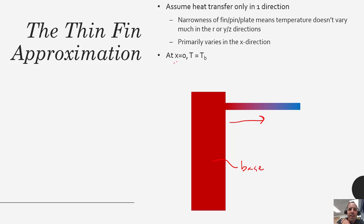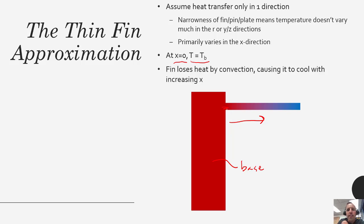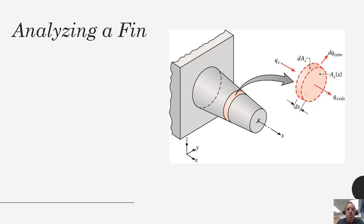We are assuming that at X equals zero our temperature is the same as the base temperature — that'll be one of our boundary conditions. The fin is losing heat by convection, and as X increases the fin gets cooler and cooler the further out you go. We're going to analyze these systems using Fourier's law and do an energy balance, similar to how we've used the heat equation in the past except a little different because we have convection happening continuously out the sides. At every node along the way the solid will be exposed to convection, which makes the equation look a little bit different.